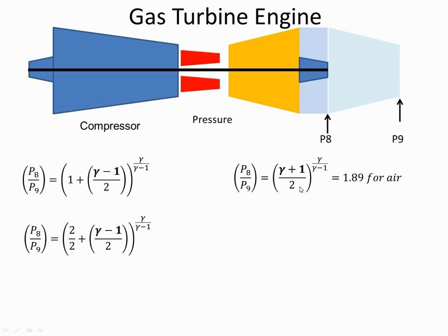Gamma plus 1 over 2. And if I put the values for gamma for air, which is 1.4, if I put that in, I get a ratio of 1.89 for air.